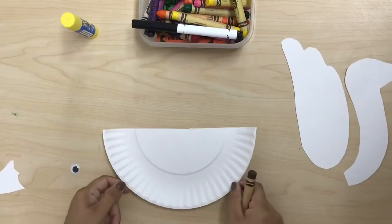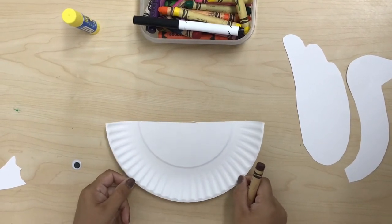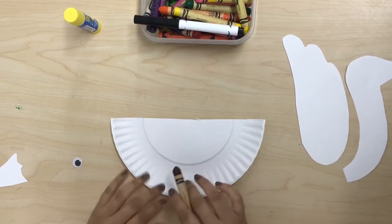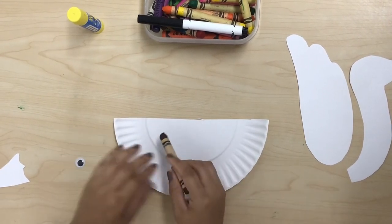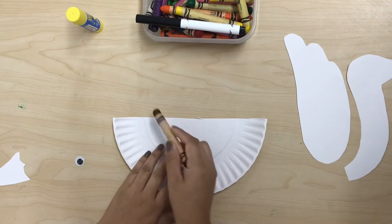We're going to take our half paper plate. It will be the body of our goose and we're going to color it. I'm going to use brown, but you can use black, black and brown, or only black.